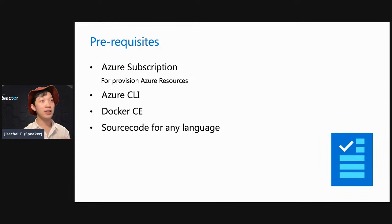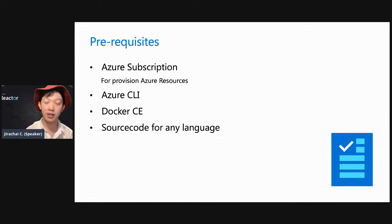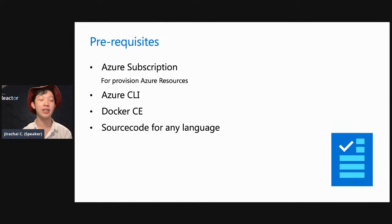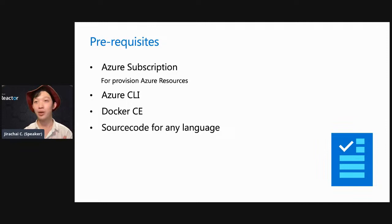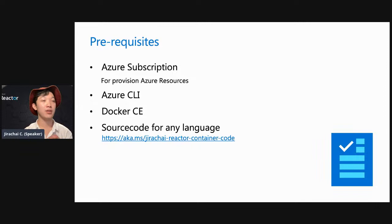Second prerequisite: install the Azure CLI. The Azure CLI is a program that allows you to control and provision Azure resources, or do authorization from the command line. Today we're going to use Azure CLI to authenticate to the container registry. Third — really important — is Docker runtime. Docker CE, which is the Community Edition, you just download from the Docker official website and install on your computer. We're going to use Docker CE to build the image and then push the Docker image into the registry. The last prerequisite is source code in any language. If you don't have application source code yet, I also prepared a sample for you — you can follow the link I'll paste into the chat.